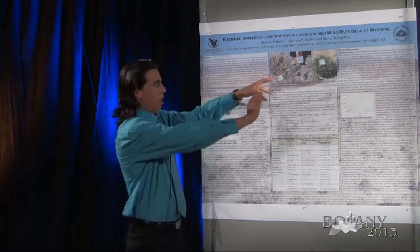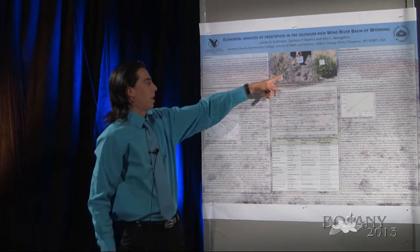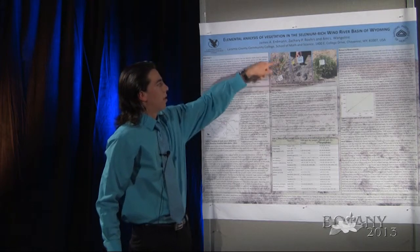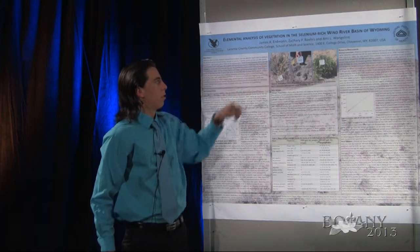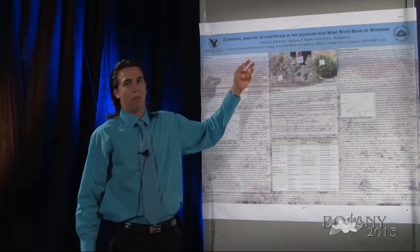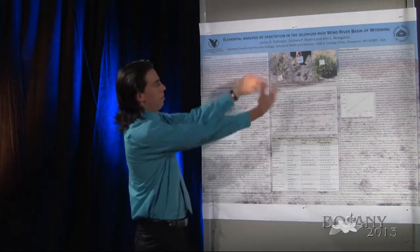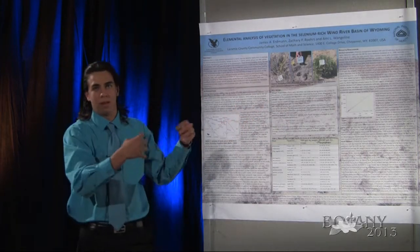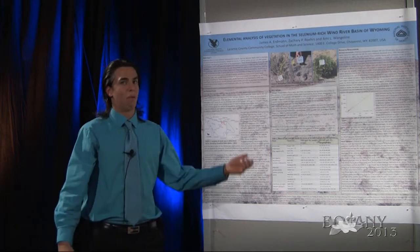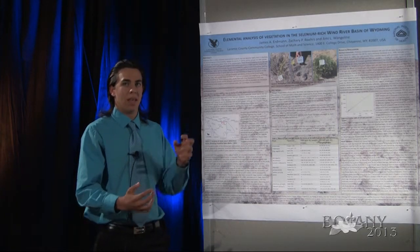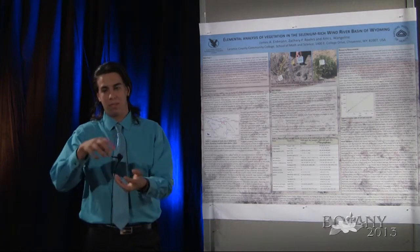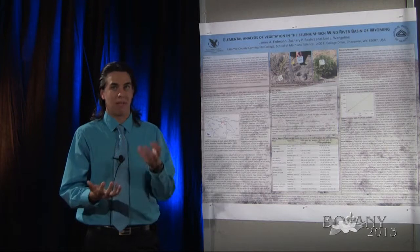There are plants that grow right next to each other. For example, here's a Stanleya pinnata — it's a hyperaccumulator — but right next to it, as you can see, is a big sagebrush, Artemisia tridentata. Since these hyperaccumulating plants take up lots and lots of selenium, they're going to redeposit it over time. Part of what we're looking at is how, in this selenium-rich area with selenium-rich plants — even richer ones — the surrounding plants are affected.